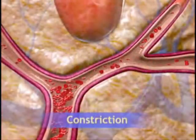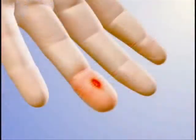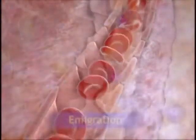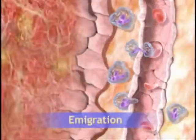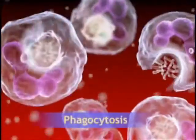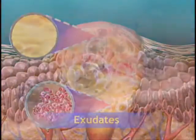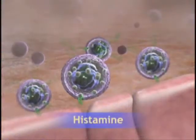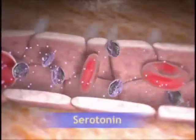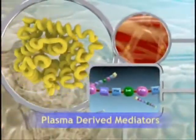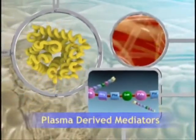Acute inflammation comprises a variety of complex protective responses to injury that together lay the groundwork for the next stages of the body's recovery: immune response and tissue repair.